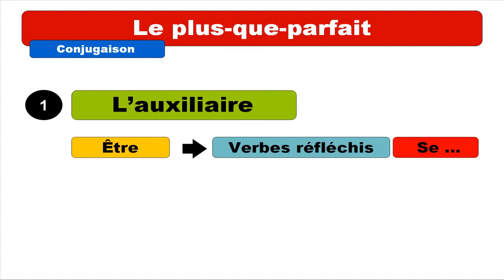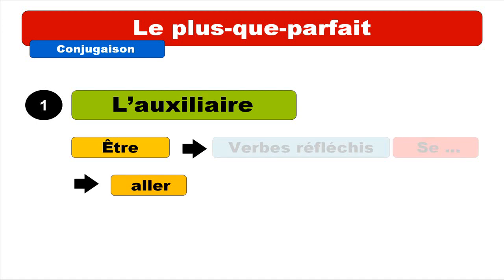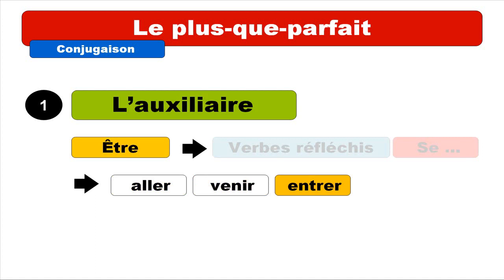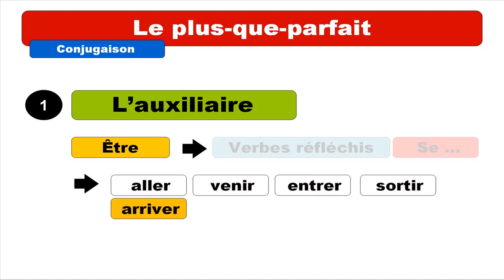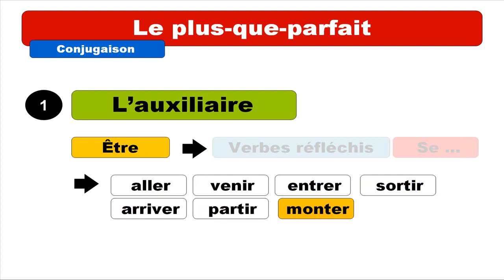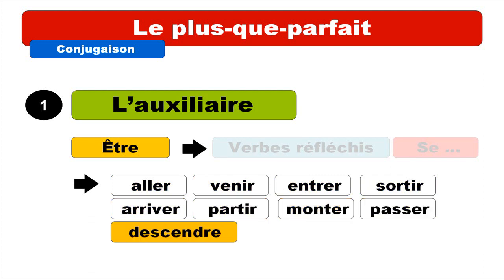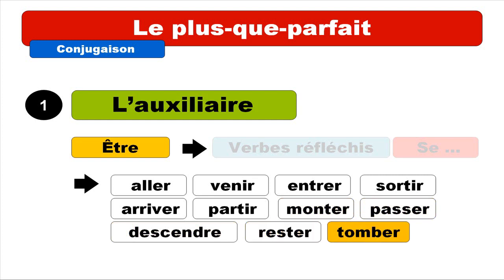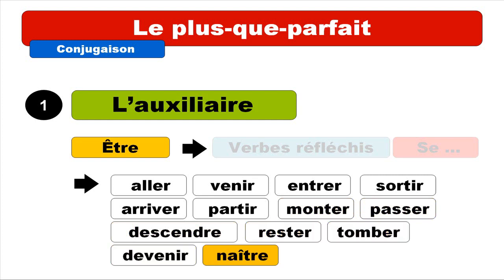Être is used for the verbe réfléchi — so all verbs starting with se — and then the following verbs: aller, venir, entrer, sortir, arriver, partir, monter, passer, descendre, rester, tomber, devenir, naître, mourir. You've got to try to remember them and keep in mind that they use être for le plus que parfait and all composed tenses.